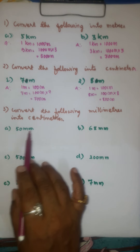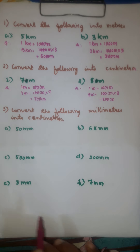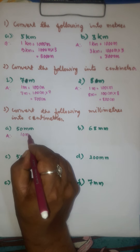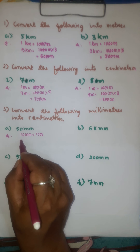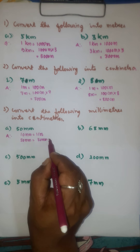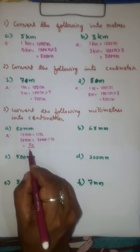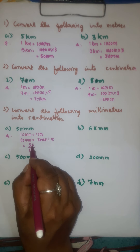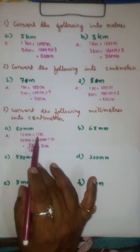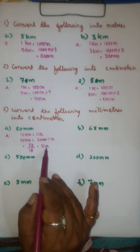In the third section, you have to convert millimeters into centimeters. We know that 10 millimeters is equal to 1 centimeter. So, 50 millimeters divided by 10 — the 10s get cancelled — we will get 5 centimeters. This is one of the easiest ways of dividing by the cancellation method.